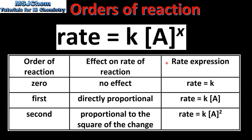Here we have an example of a rate expression for zero order, first order, and second order. As you can see, a zero order reactant does not appear in the rate expression.